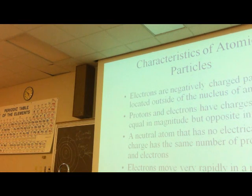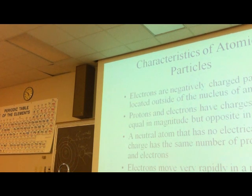Electrons are negatively charged, protons have the same charge. A neutral atom has no electrical charge because it has the same number of plus protons and minus electrons. Electrons are very small, they move around very rapidly, a lot like a mosquito.